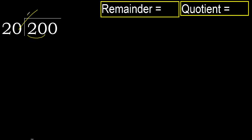20 multiplied by which number is nearest to 20, but not greater? 20 multiplied by 2 is 40. 40 is greater. Multiply by 1 is 20.